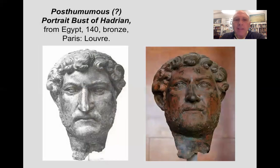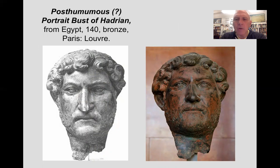These images are more than likely to commemorate him at the fullness of his reign — him as an emperor. This one comes from Egypt, also another bronze sculpture, a bust portrait of the emperor. One of the distinguishing features you'll notice about him is that he's bearded, and he's really among the first of the philosopher emperors, all of whom sport a beard.